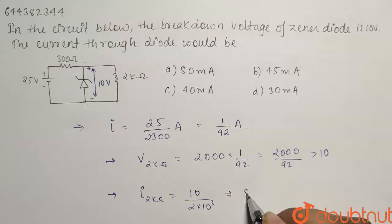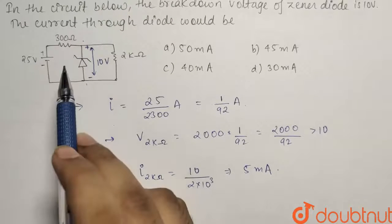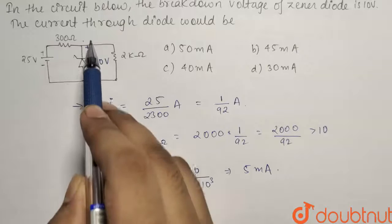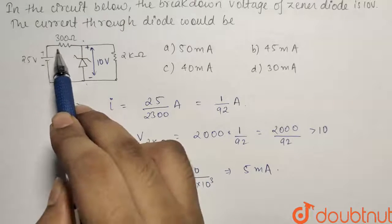So from here what we have, the current comes out to be equals to 5 milliamperes. Now if I talk about the second, that is our 300 ohm resistance. So the potential across it will be, this is 0 volt, this is 10 volts, so the potential difference is how much? It is equals to 15 volts.